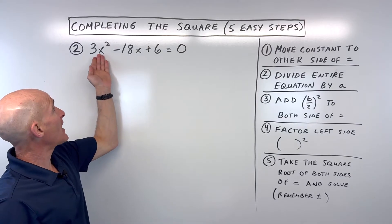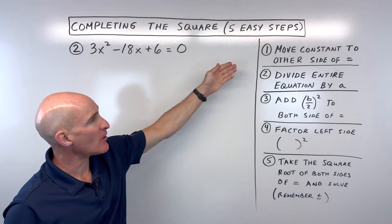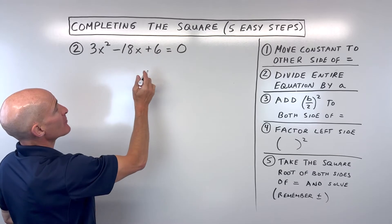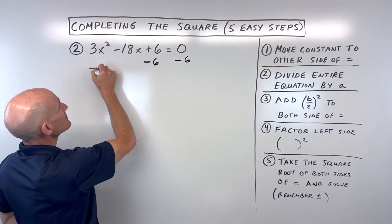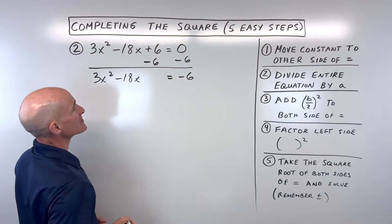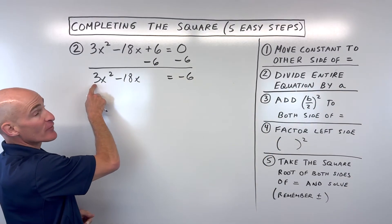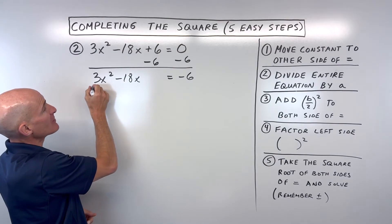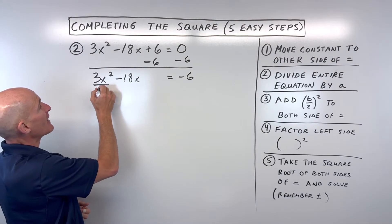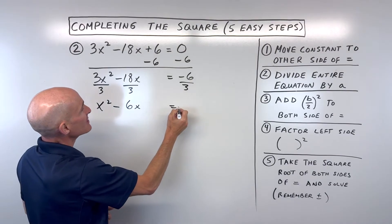Example number two, we have 3x squared minus 18x plus 6 equals 0, and we want to solve this by completing the square. Step one: move the constant to the other side — subtract 6 from both sides, giving us 3x squared minus 18x equals negative 6. Step two: divide the entire equation by a, which is 3. Dividing everything by 3 on both sides leaves us with x squared minus 6x equals negative 2.